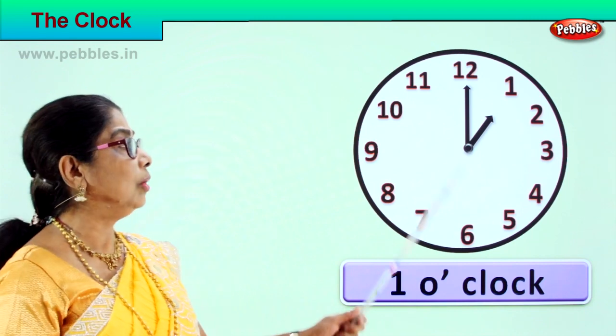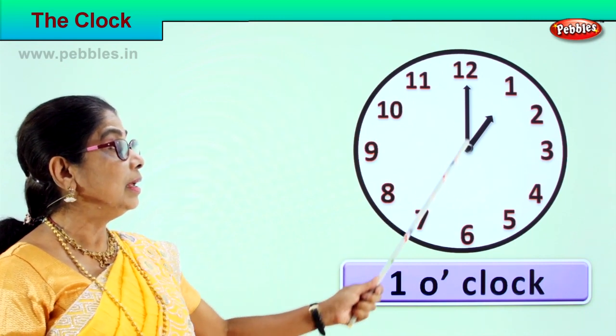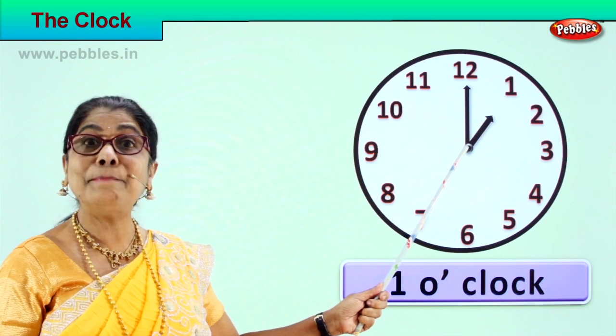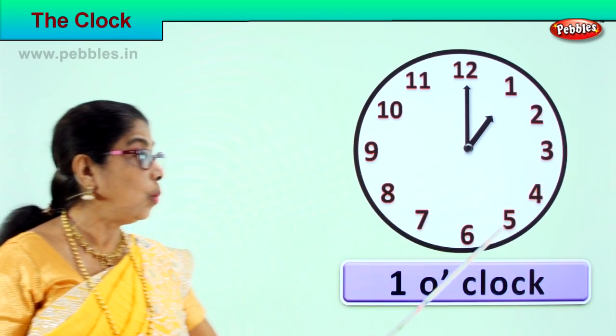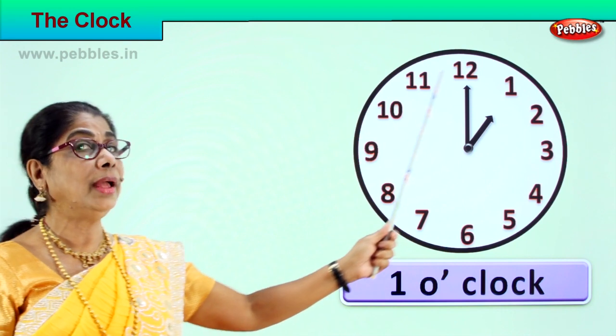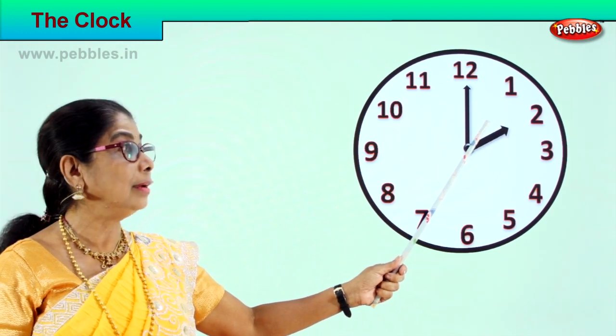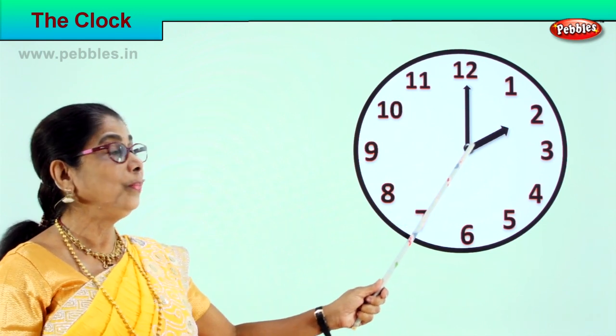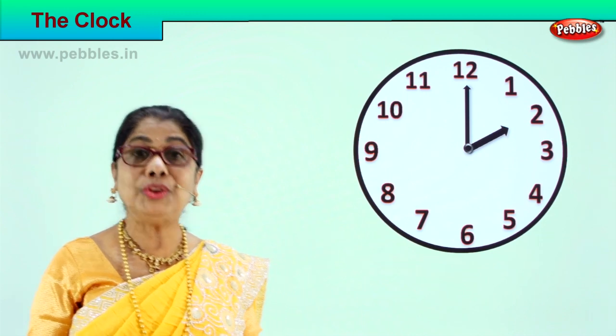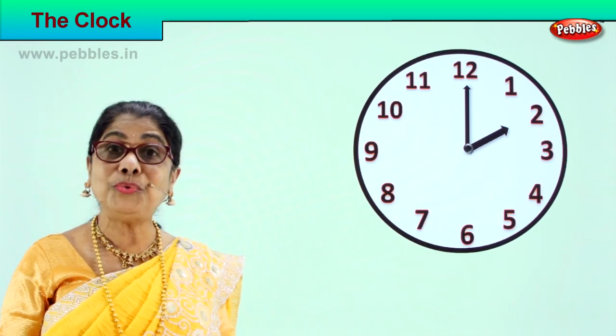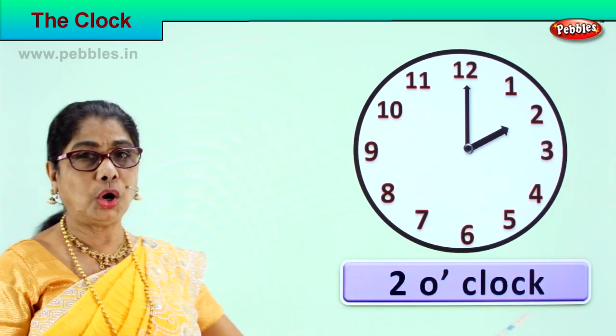When it becomes two o'clock, the long hand — the minute hand — has gone once right round and comes back to twelve. In the meantime, the short hand — the hour hand — shifts to two. So what time is it now? How do you read it? Two o'clock, because the hour hand is on two. Very good — we read it as two o'clock.